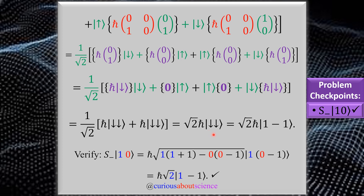The two down arrows represent the state |1,-1⟩ as highlighted in the question. That makes sense because we started in state |1,0⟩, and lowering takes M down by 1 to M = -1. We verify this by plugging into the eigenequation derived from mimicking orbital angular momentum: for S=1 and M=-1, the formula yields the same result, confirming we are good to go.